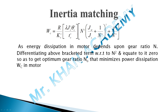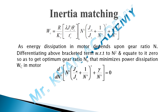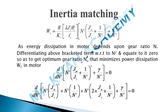Energy dissipation in the motor depends on gear ratio. To find the optimum gear ratio that minimizes heat dissipation Wc, we differentiate the bracket term with respect to n² and equate to zero. The bracket term is: n²·Jm/Jl + 1/n², all squared, plus γ/n². Setting d/d(n²) of this bracket term equal to zero gives us the optimum gear ratio n₀.